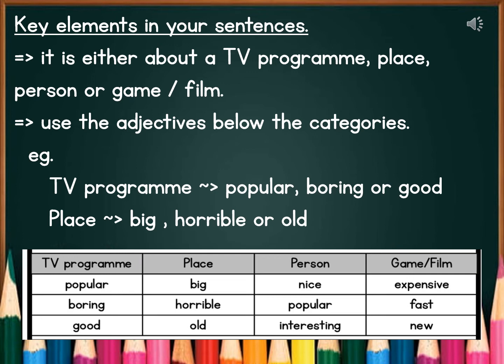Another example is place — tempat. If you want to write a sentence about a place, you use any of the three adjectives which are: big, horrible, or old. And for person, we use nice, popular, or interesting. And finally, when you want to write a sentence about a game or a film, you use the adjectives: expensive, fast, and new. So you understand?